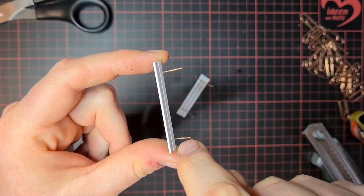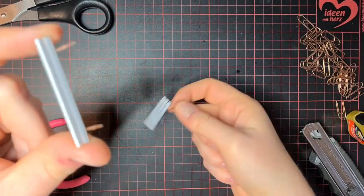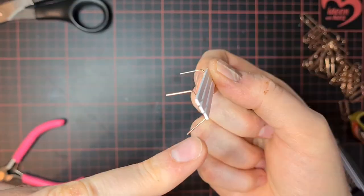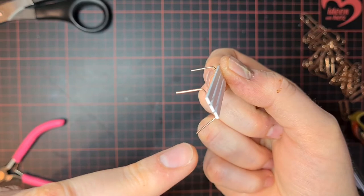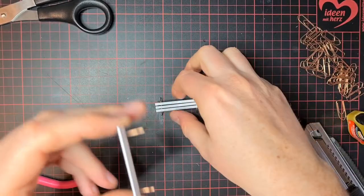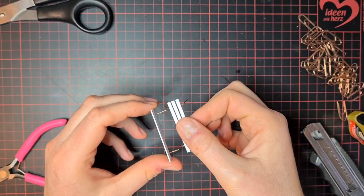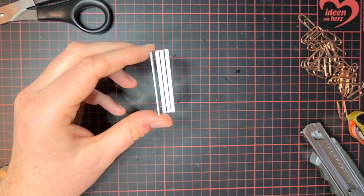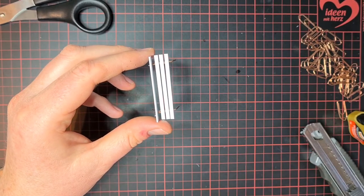Now we put some superglue here on the wire. Turn the first part around, and on the side where the wire is a bit longer, we insert it. Let it dry for a minute.